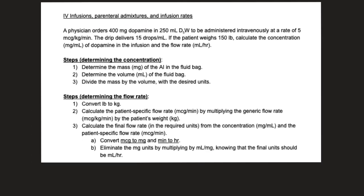For the first problem, a physician orders 400 mg of dopamine in 250 mL D5W to be administered IV at 5 mcg/kg/min. The drip delivers 15 drops/mL and the patient weighs 150 pounds. We need to calculate the concentration and flow rate. First, the concentration: the active ingredient is dopamine at 400 mg in 250 mL D5W. Dividing 400 mg by 250 mL gives us 1.6 mg/mL.